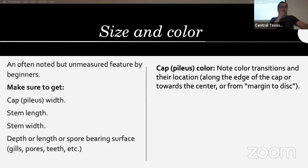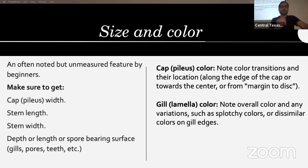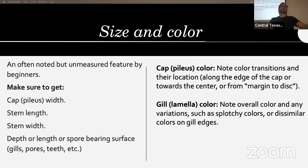Note the cap color and any transitions — is it going from dark to light from the edge inward or vice versa? For gill color, note the overall gill color and any variations. If it's splotchy — like many Psathyrella, where they're called mottled gills — that happens with a few other species including some Deconica.